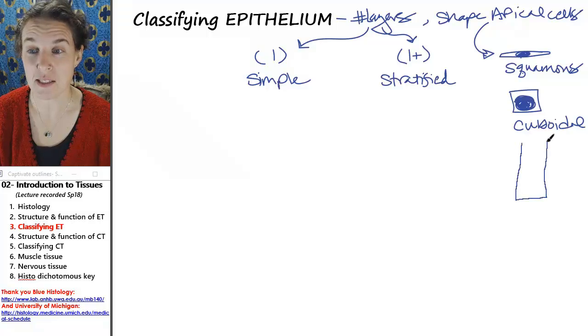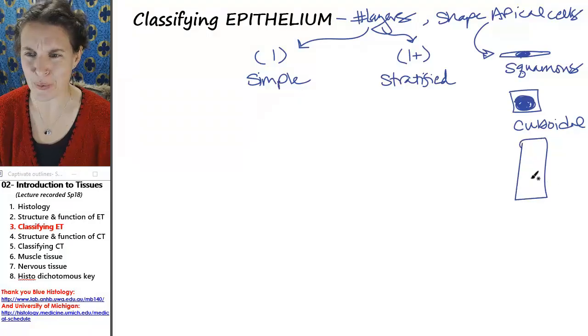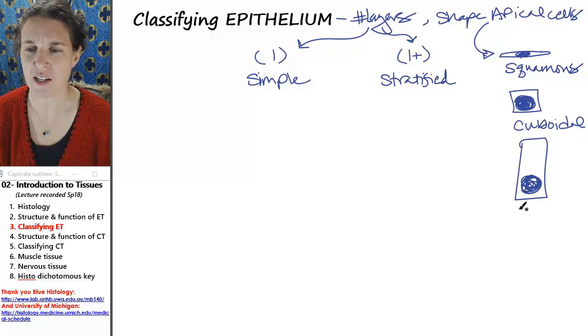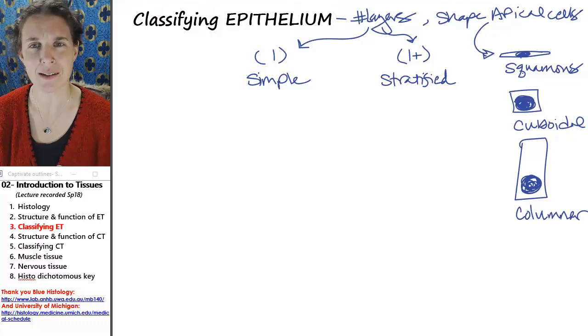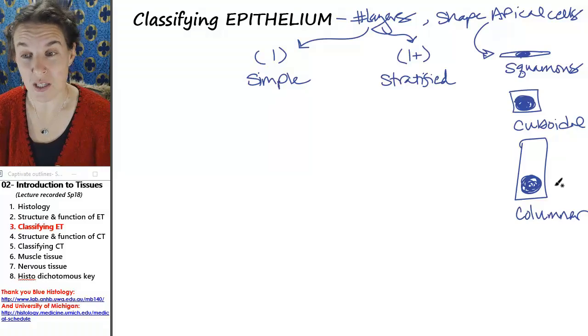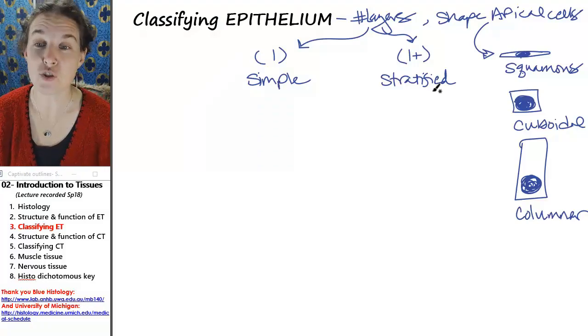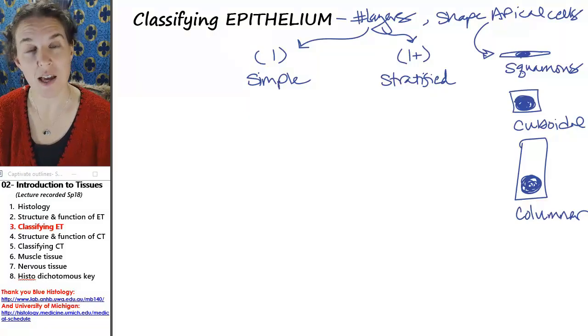Sometimes the cells are tall, and if you get a tall guy, that's actually columnar because it looks like a column standing there tall and proud. You can have simple columnar epithelium or stratified columnar epithelium.